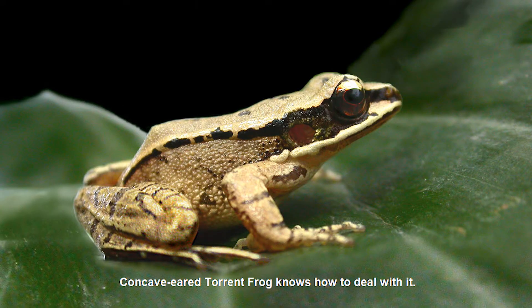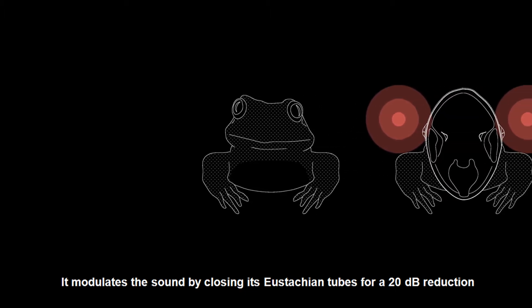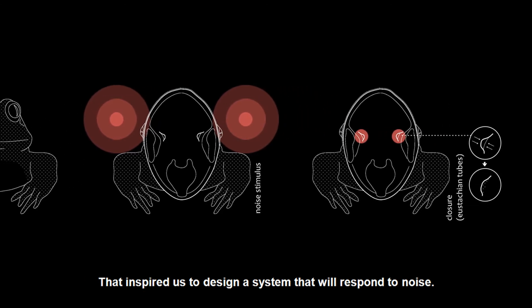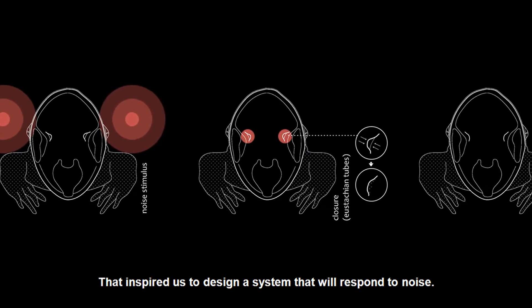Concave Torrent Frog knows how to deal with it. It modulates the sound by closing its eustachian tubes for a 20 decibel reduction. That inspired us to design a system that will respond to noise.